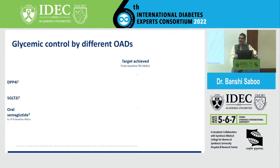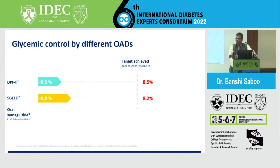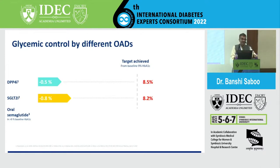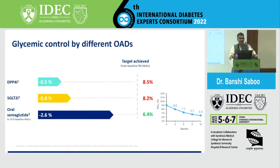Regarding glycemic control by different oral anti-diabetic agents: DPP4 may reduce A1c by around 1.0 when baseline is more than 9 or 9.5. With SGLT2, the reduction is between 0.8 to 1.2. With oral semaglutide, data has shown HbA1c can reduce up to 2.6, achieving HbA1c of even 6.4 by adding only one oral anti-diabetic agent — that's oral semaglutide.